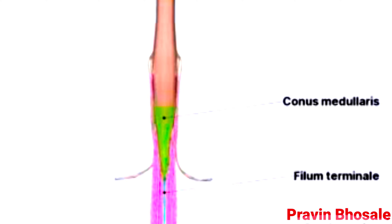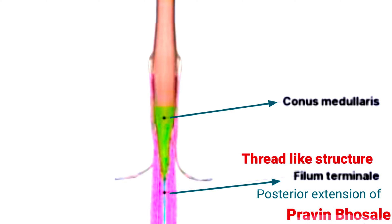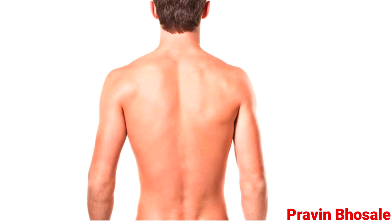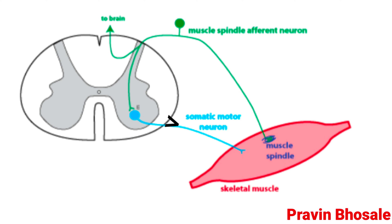The posterior end tapers to form the conus medullaris, and further into a thread-like structure called the filum terminale, which is merely the posterior extension of the pia mater. The spinal cord shows cervical swelling and lumbar swelling. It acts as a pathway for conduction of nerve impulses between the brain and different parts of the body, and also controls spinal reflexes.